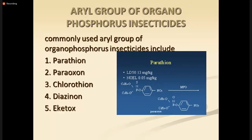The moderately toxic compound has a fatal dose of around 10 to 25 grams — these are animal insecticides, with diazinon as an example. The highly toxic group has a fatal dose of less than 5 grams; these are agricultural insecticides and are the most fatal. Examples of highly toxic agricultural insecticides include parathion, TEPP, and methylparathion.